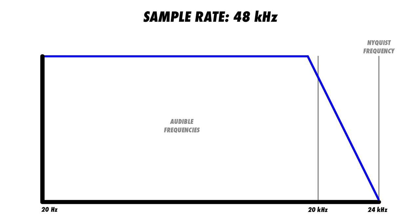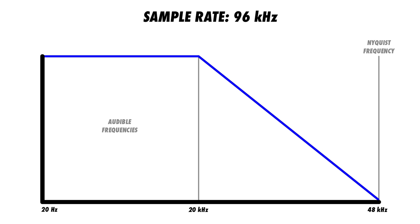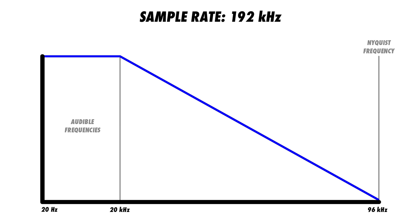Dan Worrell has one of the best videos on this topic, and I'll leave a link below. Basically, if the frequency of an audio signal exceeds 24 kHz when using a 48 kHz sample rate, it will cause lower frequency artifacts that seem to reflect back downward into the audible range. This means our equipment needs to filter out all frequencies that exceed the Nyquist frequency before converting the signal to digital. Creating an analog low-pass filter steep enough to remove all frequencies above Nyquist without affecting the audible range is quite difficult — and this is where higher sample rates come into play.